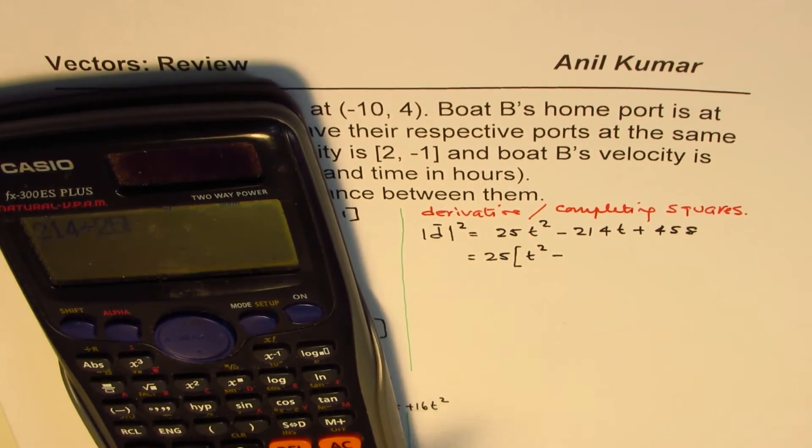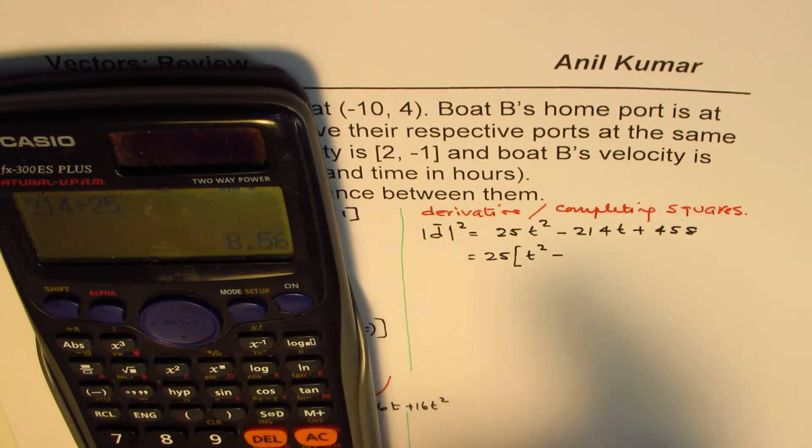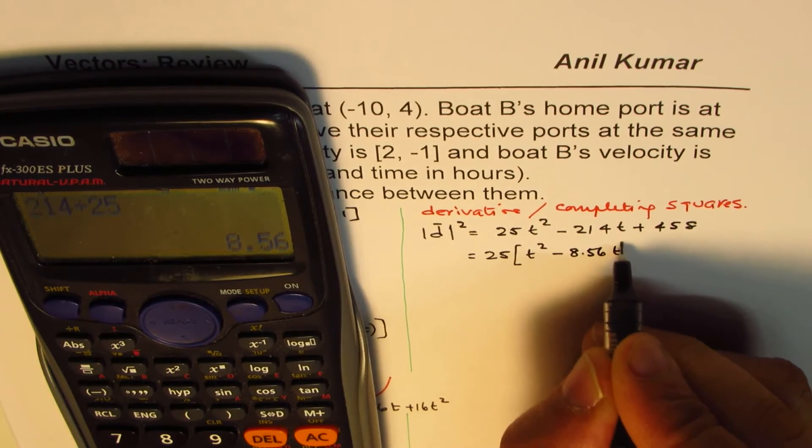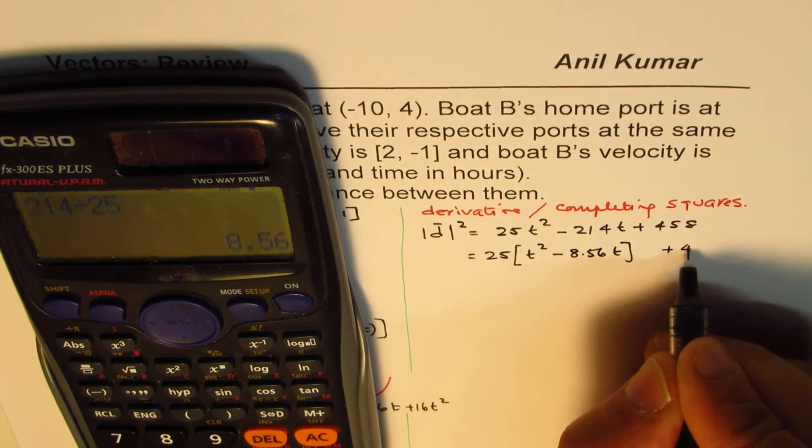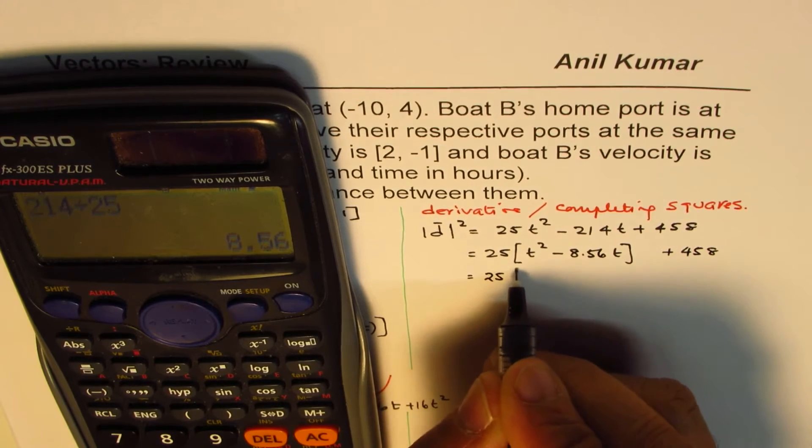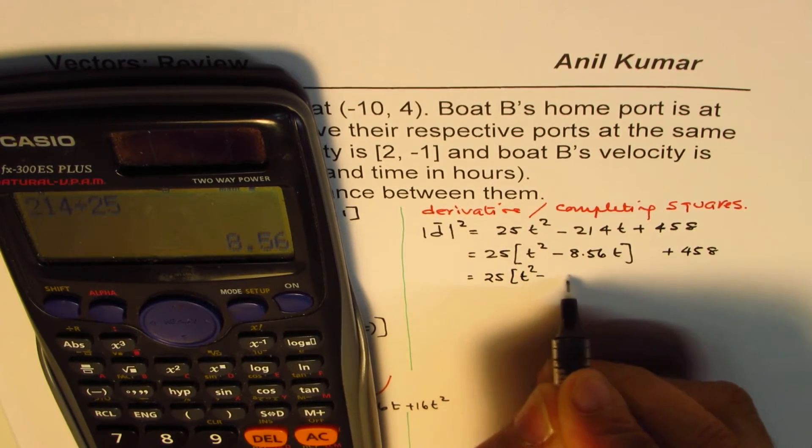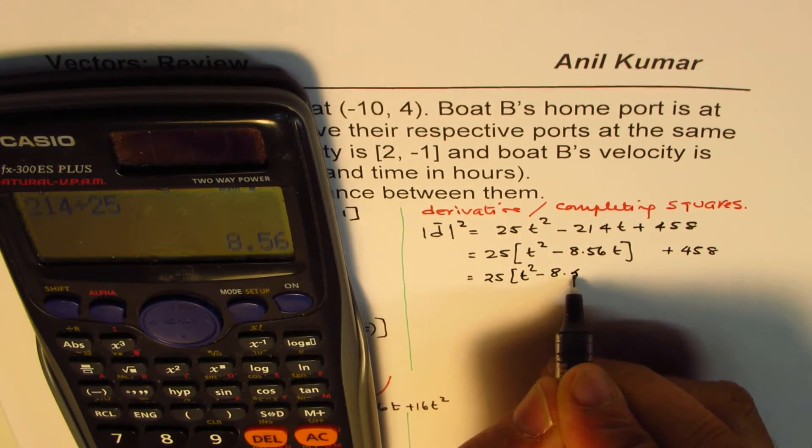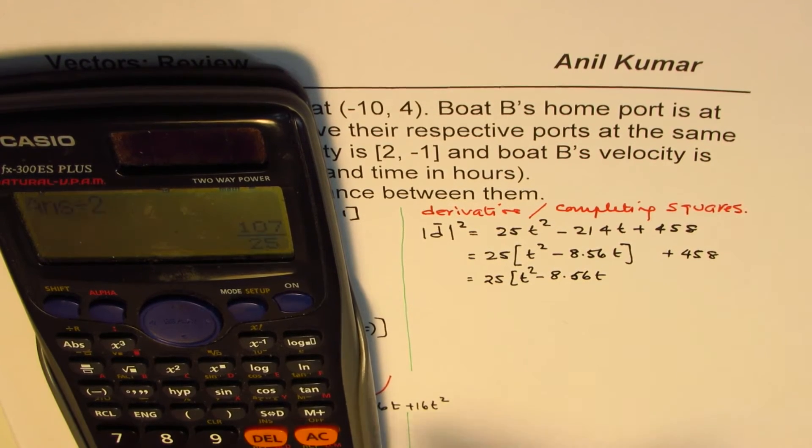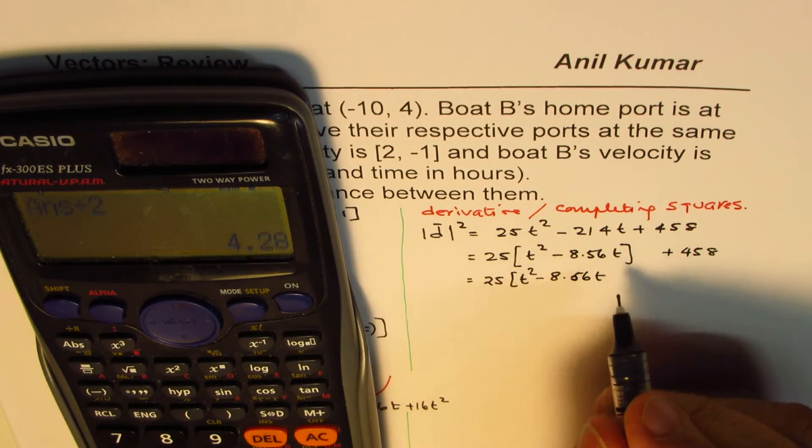214 divided by 25 in decimals is 8.56t. And we'll keep this outside, 458. So that gives us 25(t² - 8.56t). And what is half of this? Divide by 2, 4.28. So we'll add 4.28² and take away 4.28². And then add this 458.